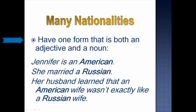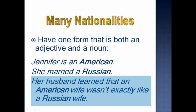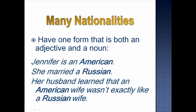Many nationalities have one form that is both an adjective and a noun. For example, American and Russian can be used as singular nouns: I'm identifying myself as one American, and my husband as one Russian. They can also be used as adjectives — describing the noun 'wife,' as in 'an American wife' or 'a Russian wife.' The same form works for both. You can see the pattern in the ending: American, Russian — both end in -an.